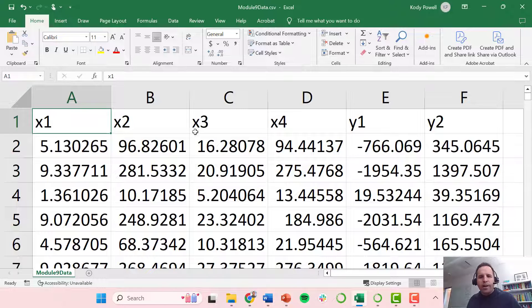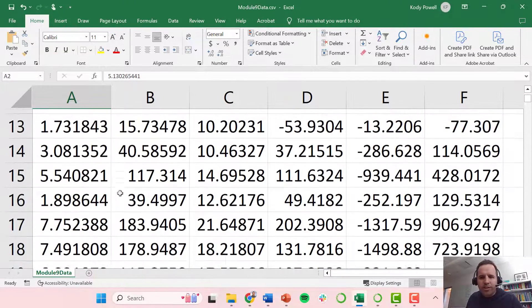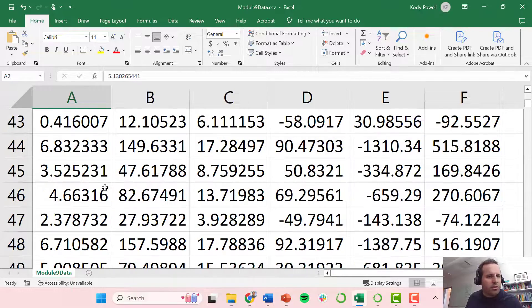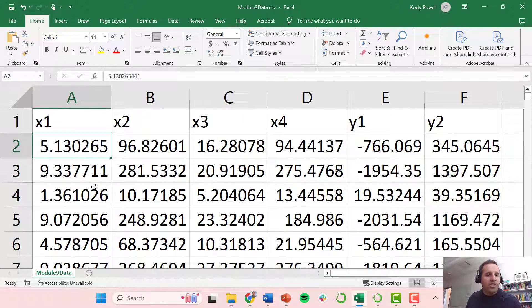Specifically we've got about a thousand data points with four inputs, X1 through X4, and then we have two outputs Y1 and Y2. Certainly you can see just glancing through the data it's really hard to make any conclusions or understand how these variables are related to each other.